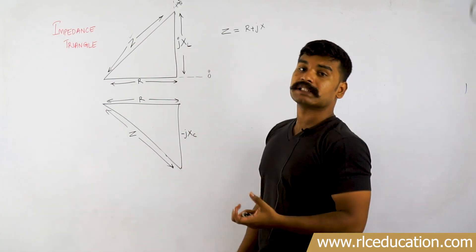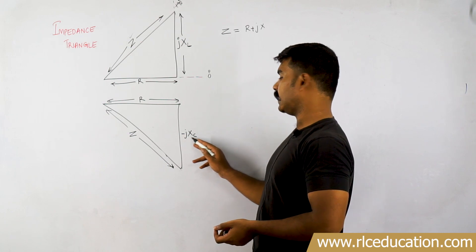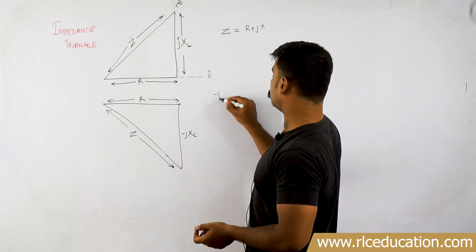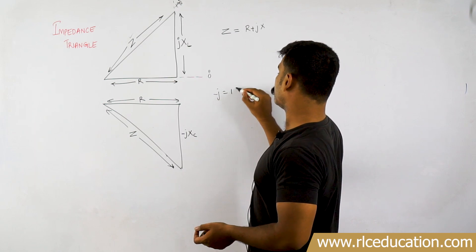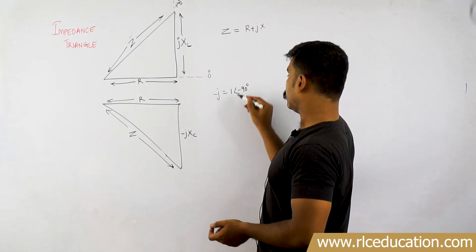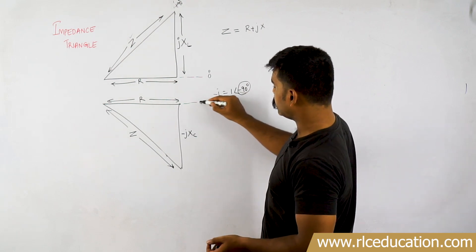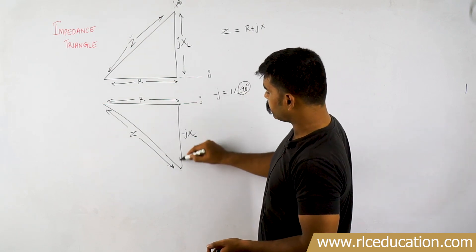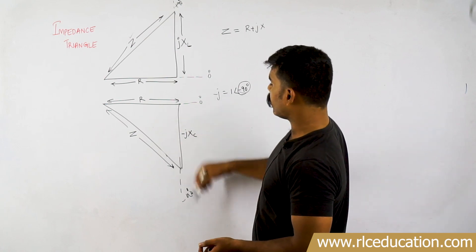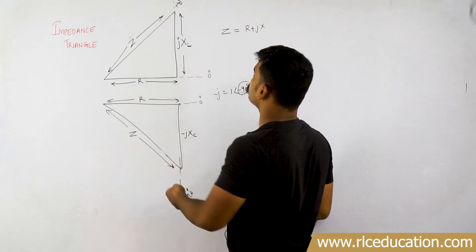If you want to represent a capacitive reactance, you have to take minus Jxc. Minus J indicates minus 90 degrees, as we already discussed. That means your vector will be at minus 90 degrees. If this is zero degrees, minus 90 is downward. So Xc will be along minus 90 degrees like this, and this is the closing side, which is the impedance.